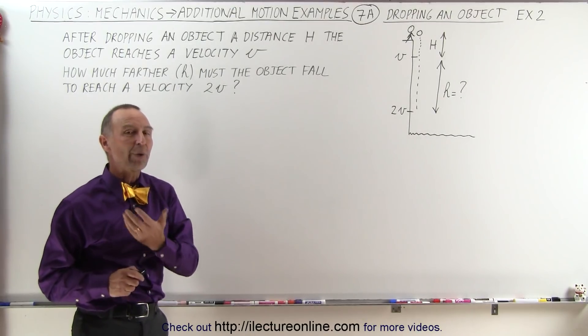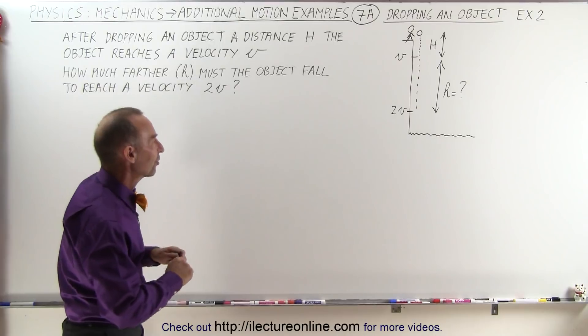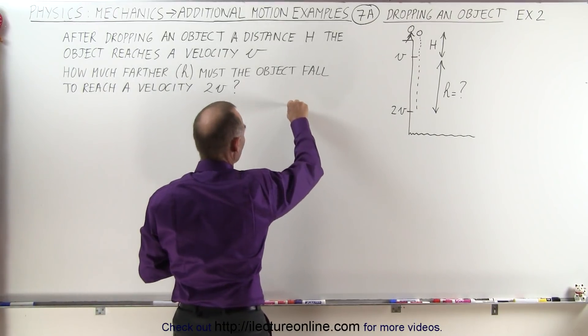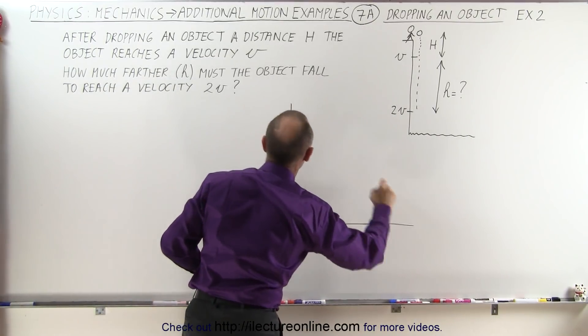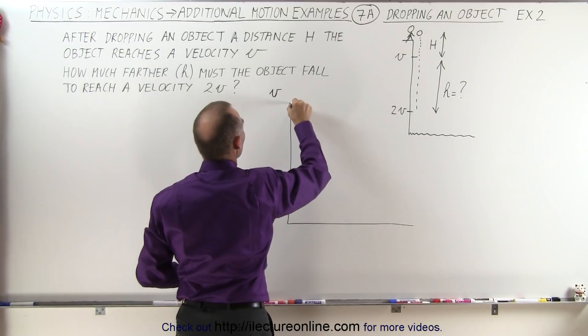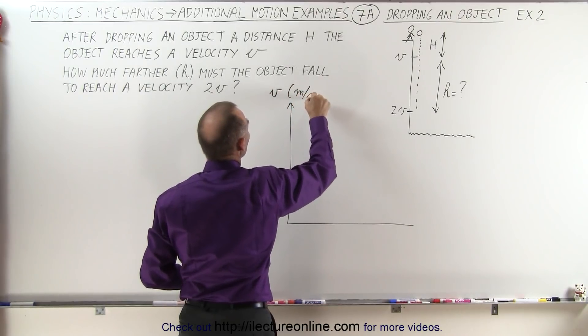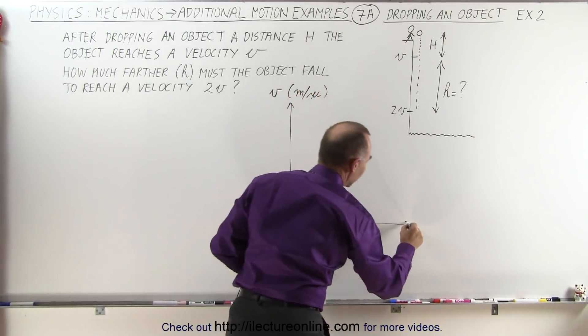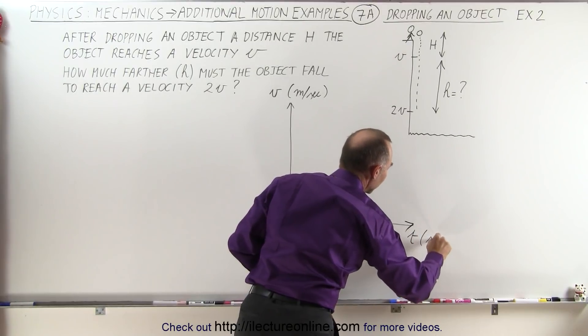So we're going to try to solve this in a graphical method using the velocity versus time graph. So we'll draw a graph like this. The vertical axis is velocity and that will be in meters per second and then on the horizontal axis is time and that will be in seconds.